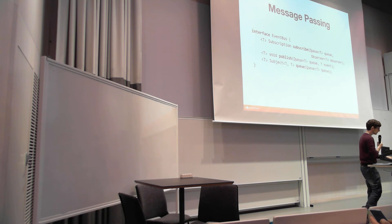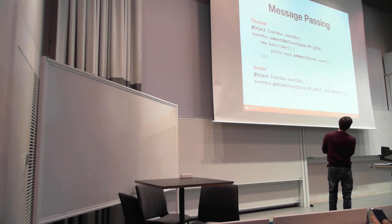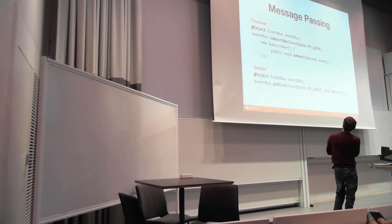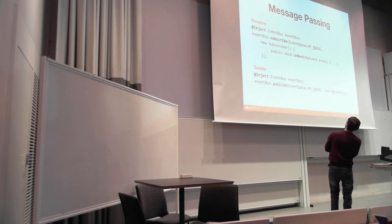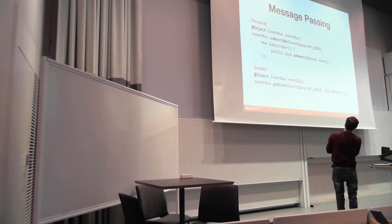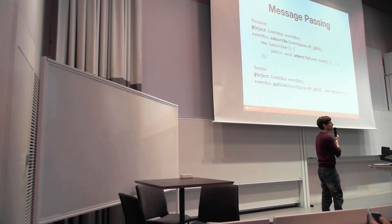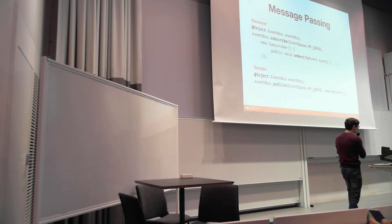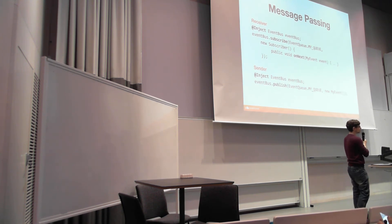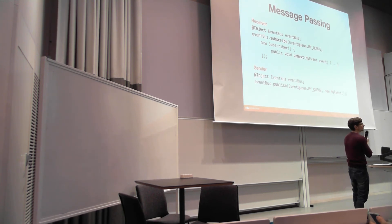The way we use this is — we use Dagger as well — we inject the event bus on the receiving side and subscribe a subscriber to a particular event queue, which is typed, which is nice because it gives you type safety. In my subscriber I can then react to this event with no knowledge of the actual sender putting data into the queue. On the sending side, I inject my event bus and can publish to this queue in a very similar way. This comes with all the nice things RxJava gives you, like error handling — if anything goes wrong, I still have my standard handler to react to.